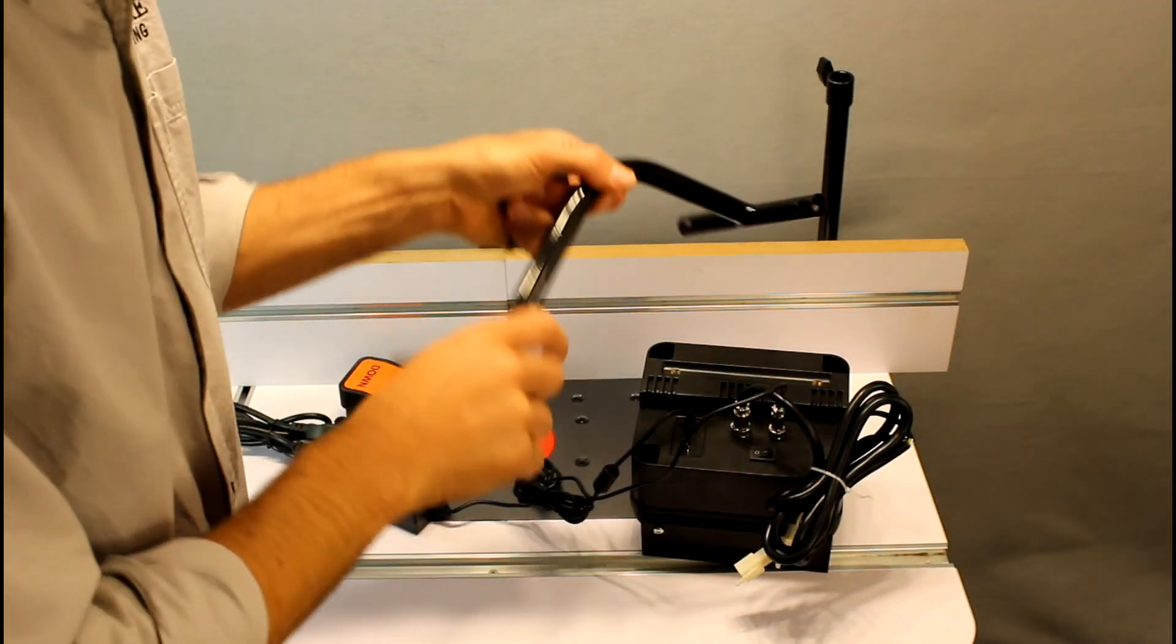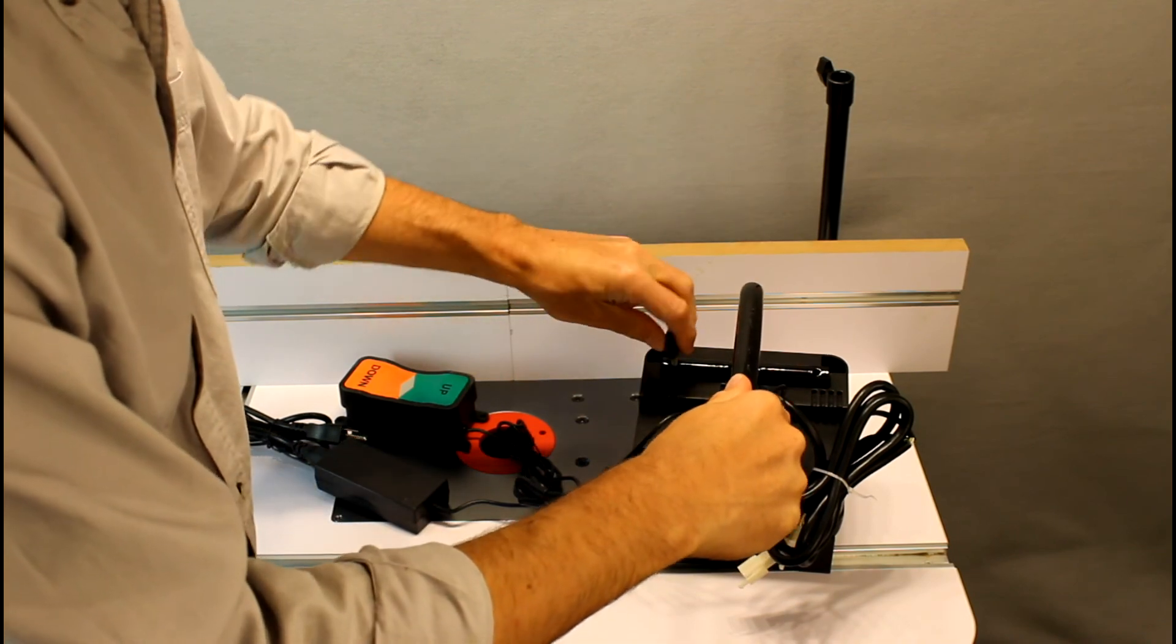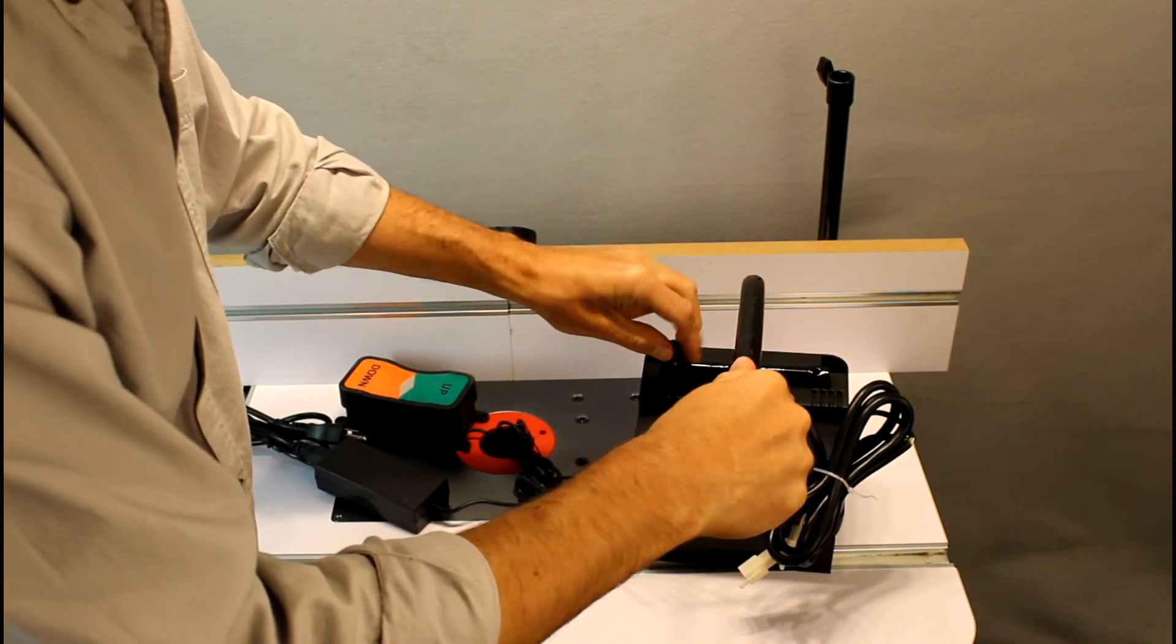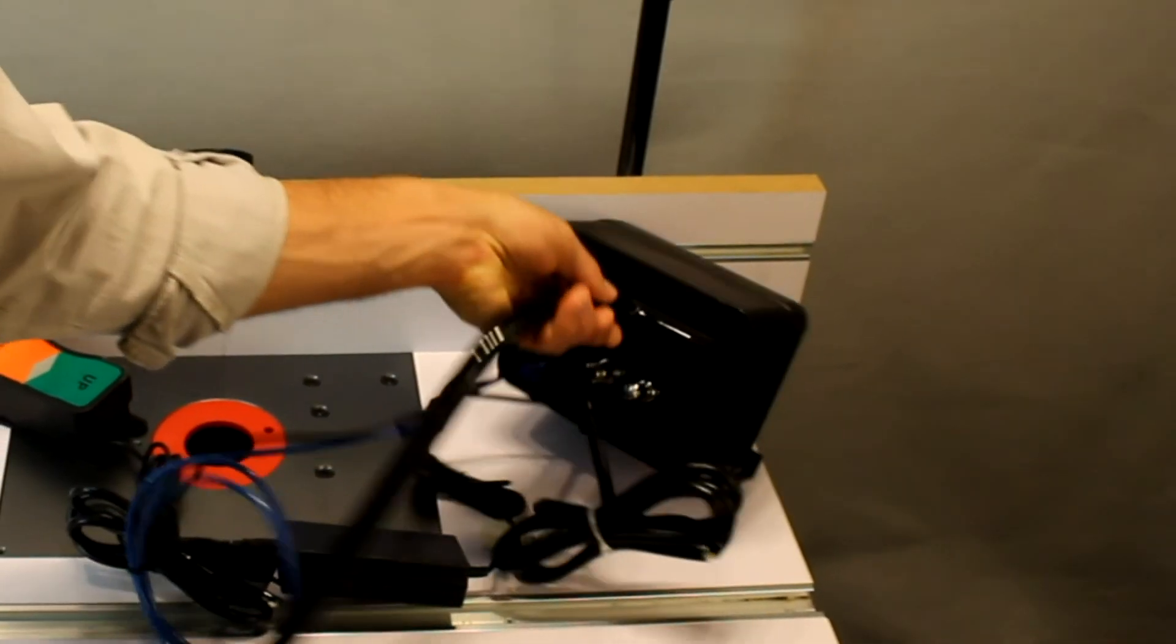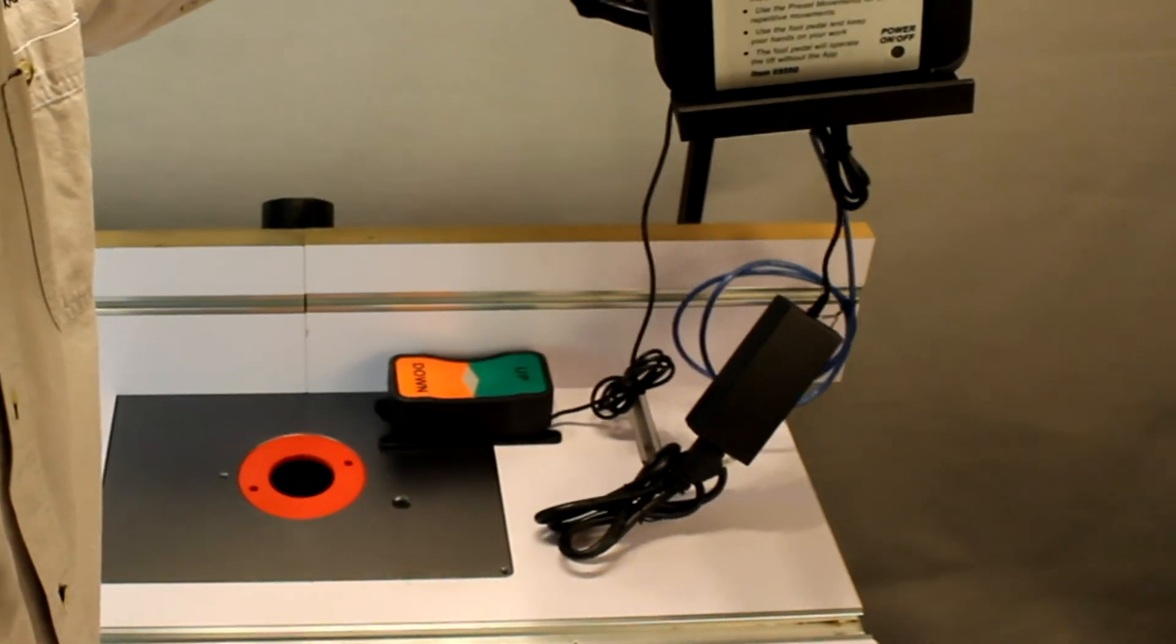The upper part of the mounting arm fits right into the back of the ECB and gets screwed into place. The upper part fits into the lower part and gets held in place by a thumb screw.